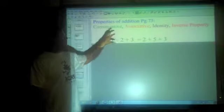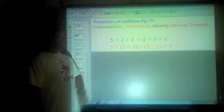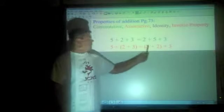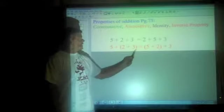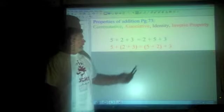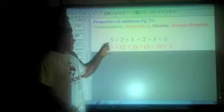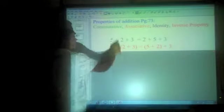The associative property is not the order, but the grouping of numbers. You'll notice the order of the numbers has not changed: 5, 2, 3. What's changed is what's inside the parentheses. Here 2 and 3 are inside. Now 5 and 2 are inside. That's different numbers in the parentheses, not the order. These two can get easily confused.